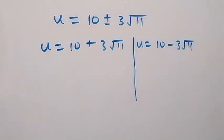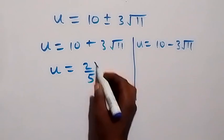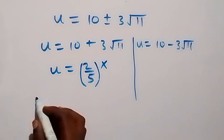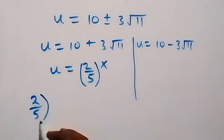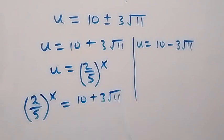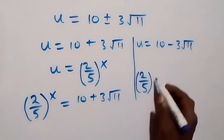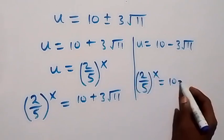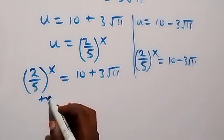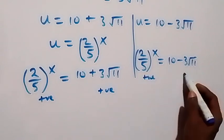Recall that we represented u as (2 over 5) raised to power x. Substituting back: in the first case, (2 over 5) raised to power x equals 10 plus 3 root 11, and in the second case, (2 over 5) raised to power x equals 10 minus 3 root 11. Both of these are expected to be positive results, and both values on the right are indeed positive.